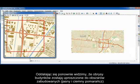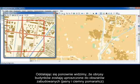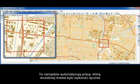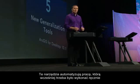Zooming out again, my building footprints become generalized into urban areas, as you see here in the light and dark orange. These tools automate a once-manual process.